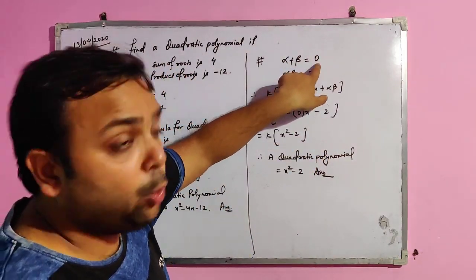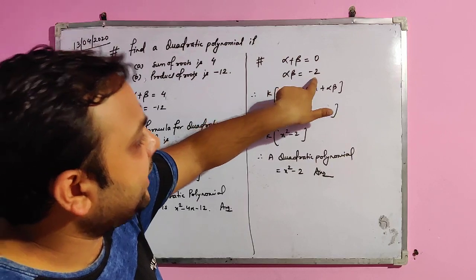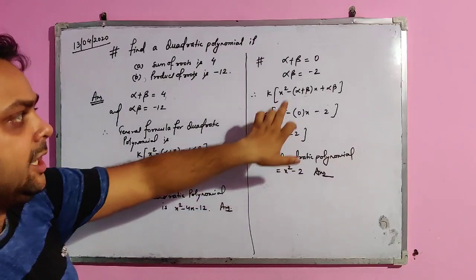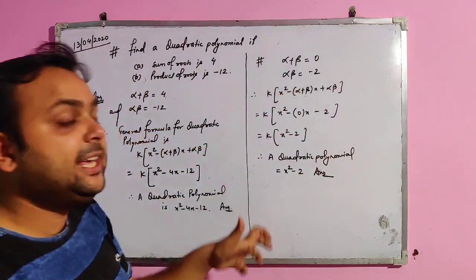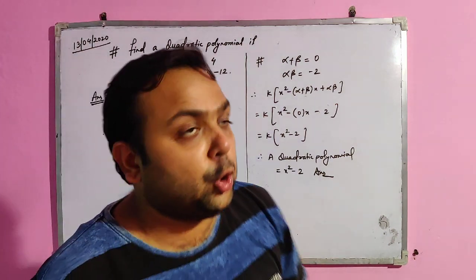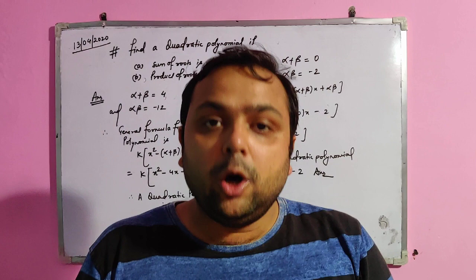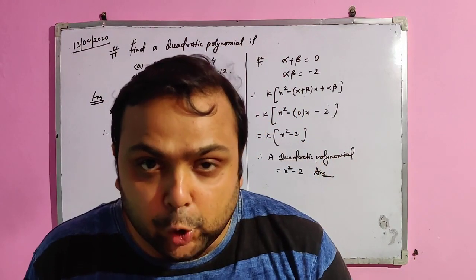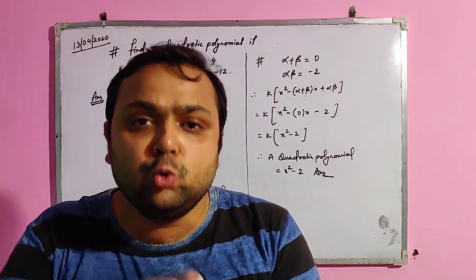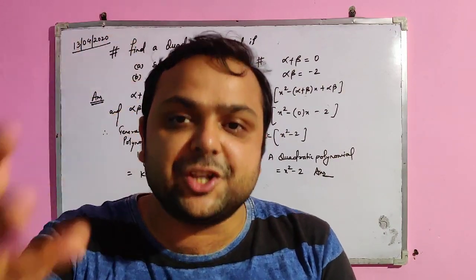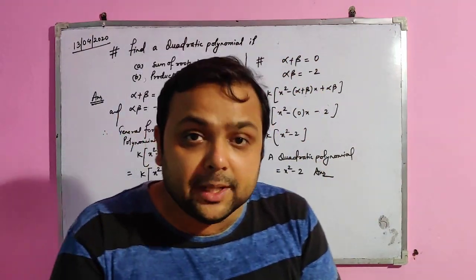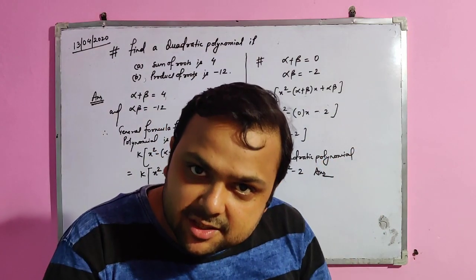We can make an infinite number of quadratic polynomials using this relation. In summary, for quadratic polynomials you need to understand: the method to calculate the roots and verify the sum and product relationships, and how to calculate a quadratic polynomial using given conditions like sum and product of roots.